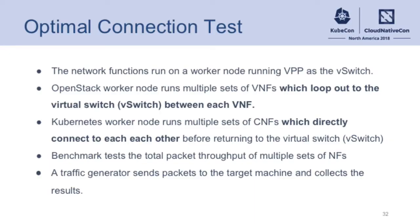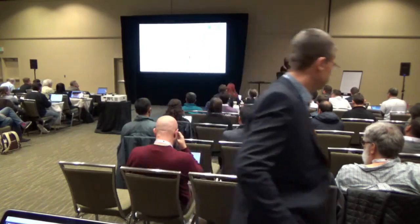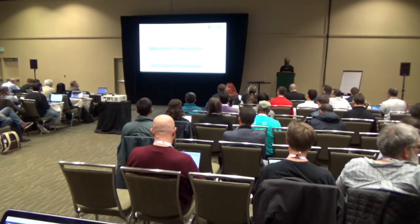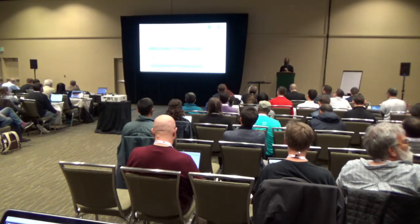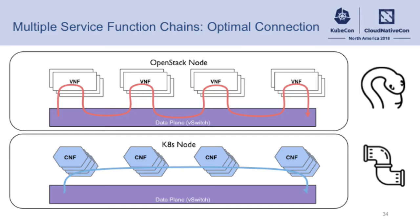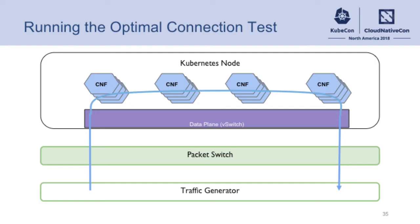Here's another test case — the optimal connection. What is the service topology that would be optimal to connect the network functions? For VNFs, that's the snake case — it loops through the V-switch. With CNFs, whether that's Kubernetes or direct on Docker, you can directly connect the CNFs. You don't have to loop back through the V-switch — you have a direct connection between each, and that's the same for single or multiple chains when we run the traffic.